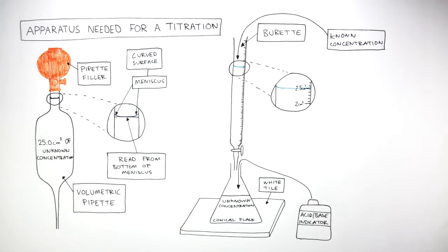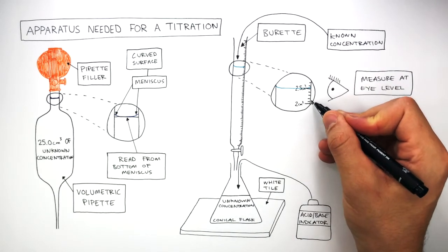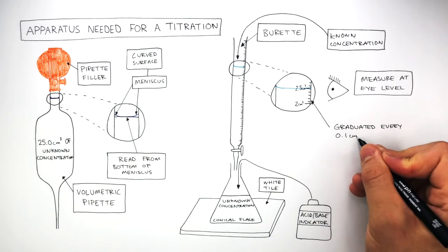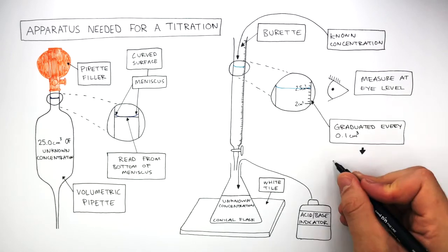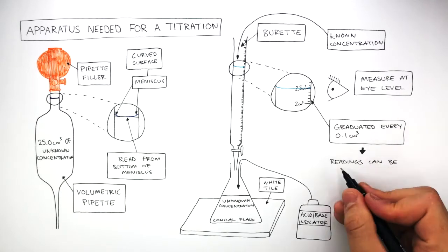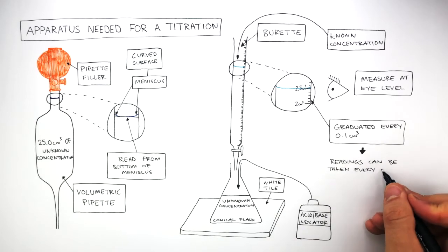When taking measurements using a burette, place your eyes next to where the measurement needs to be recorded. So measure at eye level. And remember the burette is graduated every 0.1 cubic centimetres, so readings can be taken every 0.05 cubic centimetres.